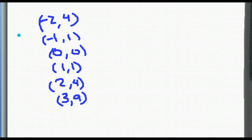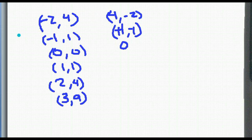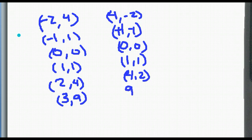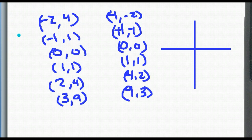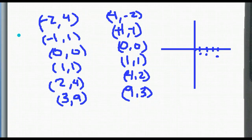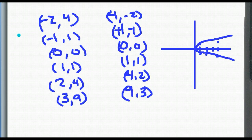So if we switch the coordinates we get: (4, −2), (1, −1), (0, 0), (1, 1), (4, 2), and (9, 3). If we graph this — just a quick freehand sketch — we get a parabola on its side. If we look at the vertical line test, this is not a function.